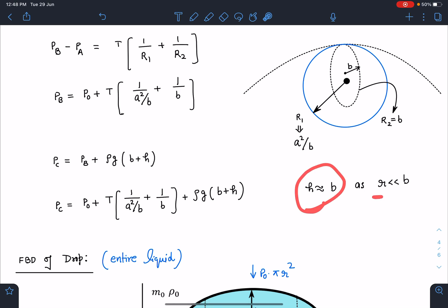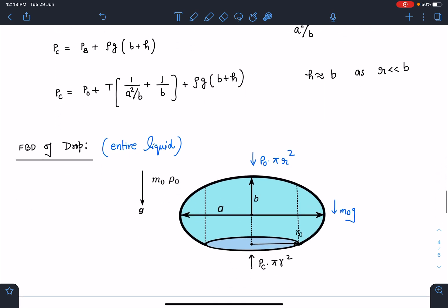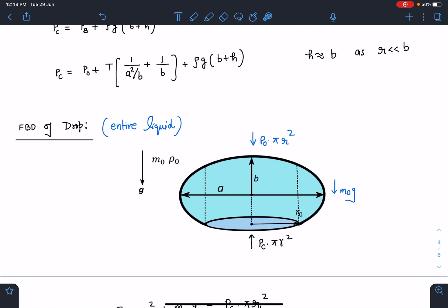In this situation, pressure at C is p₀ plus T times (b/a² + 1/b) plus 2ρgb. Now the free body diagram of this entire liquid. These are the extra parts coming away from the patch radius r.